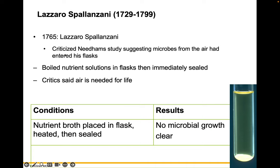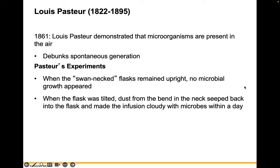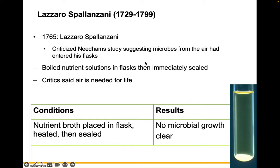In the later 1700s, Lazarus Spallanzani did another experiment and criticized Needham's study, suggesting that microbes from the air had entered his flasks. Spallanzani boiled nutrient solutions in flasks and then immediately sealed them. Critics said that air is needed for life. But from Spallanzani's experiment, the nutrient broth was heated and immediately sealed, and no microbial growth occurred — the broth remained clear. His work showed that if we can keep the air out, which might carry microbes, we can prevent growth. This is further evidence in favor of biogenesis and against spontaneous generation.